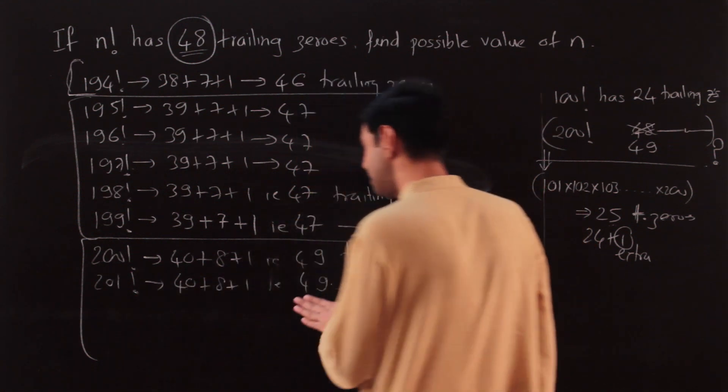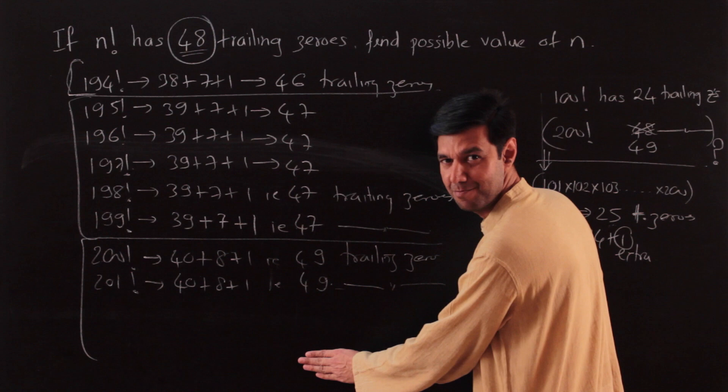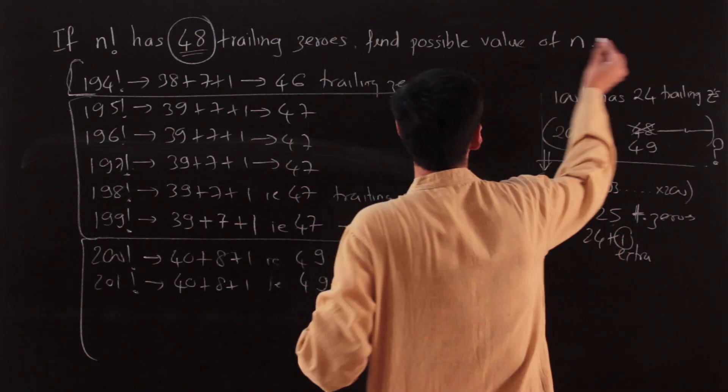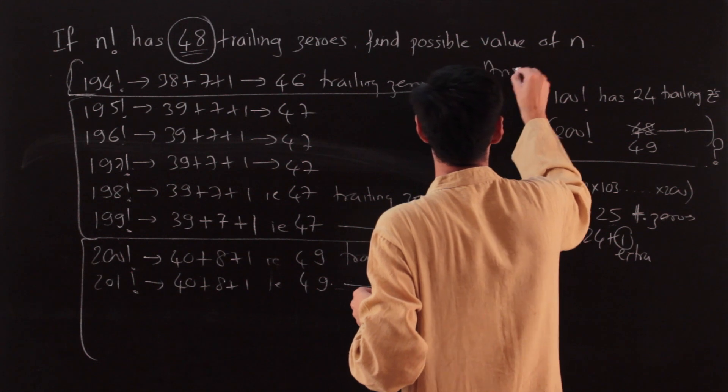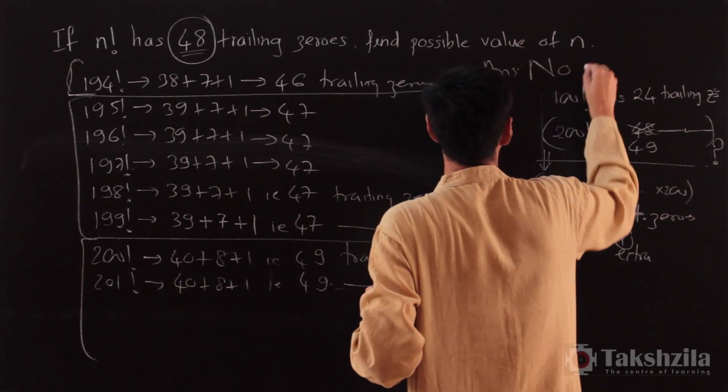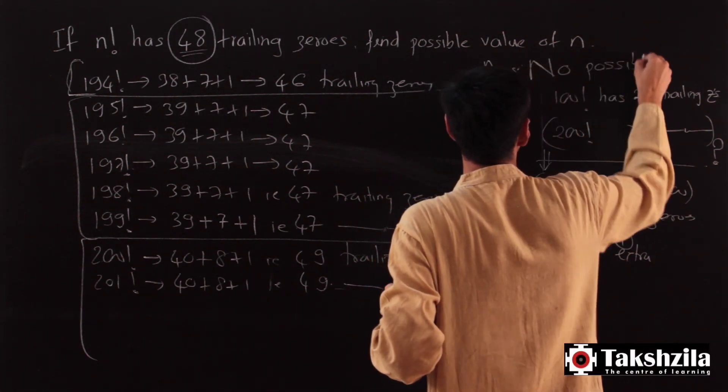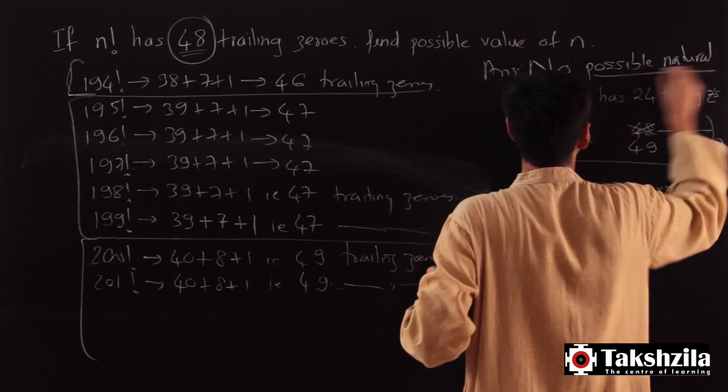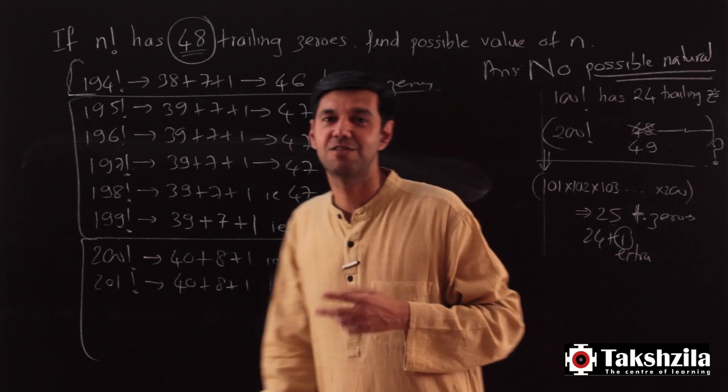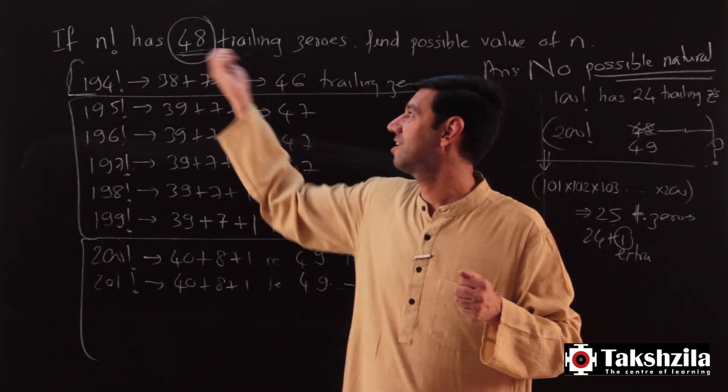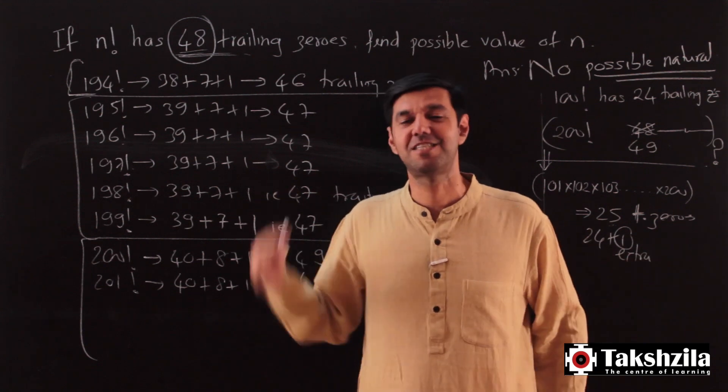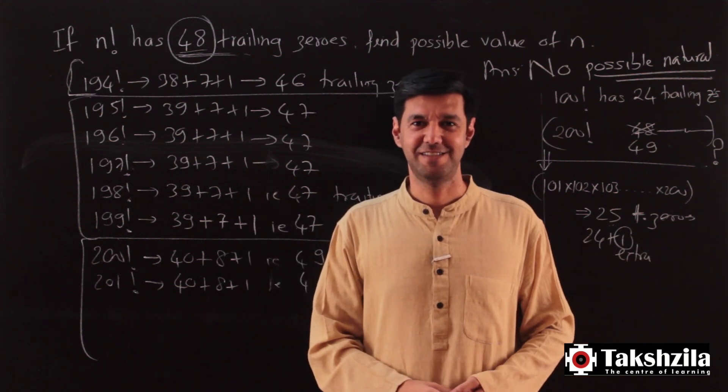We have observed, and now we see, just to finish off this question: if I go higher up, either it's going to remain 49 for some time and then increase. If I go lower, it's going to decrease. So the answer to this is there is no possible value of n. No possible natural number - and factorials are defined only for natural numbers. So there is no factorial which ends with 48 trailing zeros. That is why we need this whole chapter.